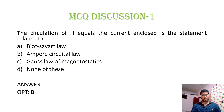MCQ 1: The circulation of H equals the current enclosed. This statement is related to: option A, Biot-Savart law; option B, Ampere's circuit law; option C, Gauss's law of magnetostatics; option D, none of these. The circulation of H, that is the closed integral of H dot dl equals I, is Ampere's circuit law. Option B is correct.